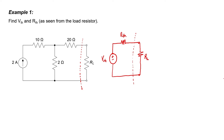As seen by the load resistor, these two circuits should look the same. Let's go ahead and find the Thevenin equivalent voltage first. We need to remove the load resistor from the circuit and imagine that we're hooking up a voltmeter to the terminals and measuring the voltage. That measured voltage is the Thevenin equivalent voltage.